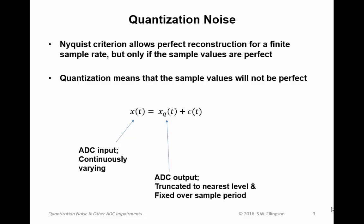x_q is the output of the ADC, a discrete time output which has been truncated to the nearest level, i.e. quantized, and which is fixed over the sample period. And then the remaining term, epsilon, represents the difference between those two quantities. And therefore, this is the quantization error, which can be interpreted as noise.